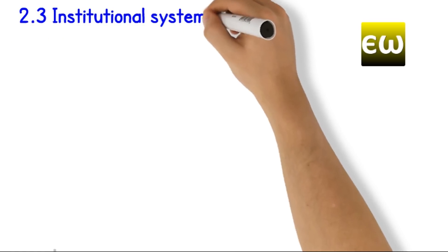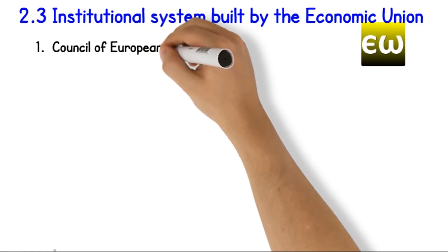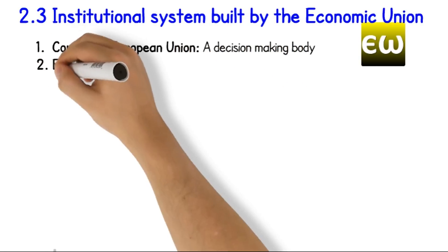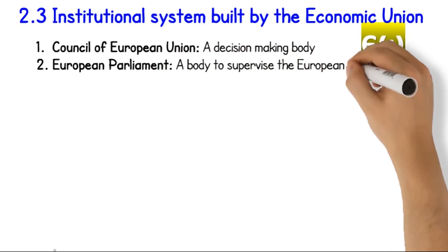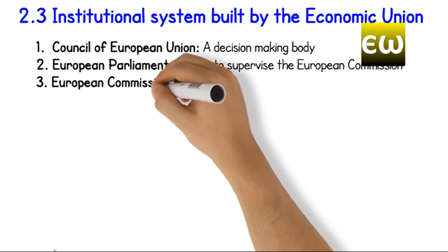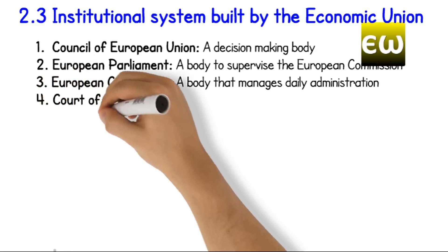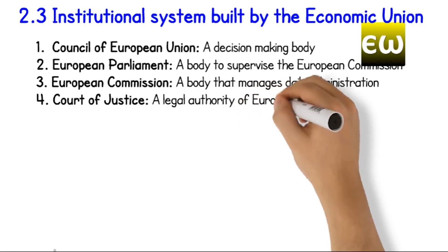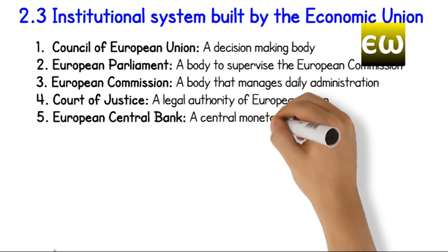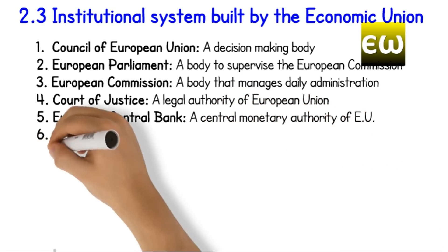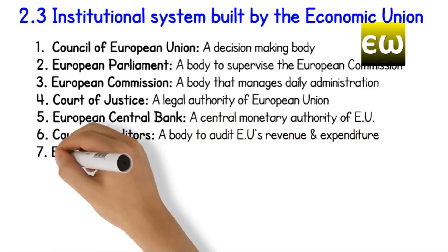Institutional system built by the Economic Union. 1. Council of European Union: a decision-making body. 2. European Parliament: a body to supervise the European Commission. 3. European Commission: a body that manages daily administration. 4. Court of Justice: a legal authority of European Union. 5. European Central Bank: a central monetary authority of Economic Union. 6. Court of Auditors: a body to audit Economic Union's revenue and expenditure.